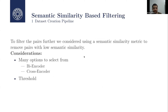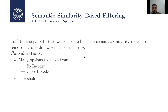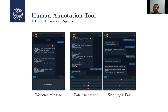Semantic similarity filtering was a key challenge and the main contribution of our work. To filter the pairs, we considered using semantic similarity models — either bi-encoders, where we get an embedding for each sentence and compare vectors using cosine similarity, or models that accept two sentences as input and output a similarity score. The problem remains the choice of threshold to filter out pairs with a similarity score lower than that threshold. To choose a threshold, we created a human annotation tool where we asked native Turkish speakers to annotate 500 pairs, used as ground truth labels.